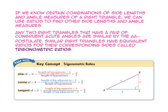If we know certain combinations of side lengths and angle measures of a right triangle, we can use ratios to find other side lengths and angle measures. Any two right triangles that have a pair of congruent acute angles are similar by the angle-angle similarity postulate. Similar right triangles have equivalent ratios for their corresponding sides, called trigonometric ratios or trig ratios.